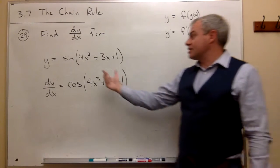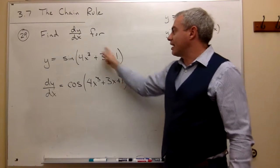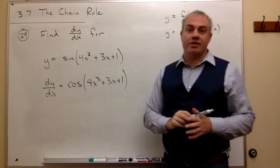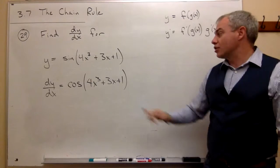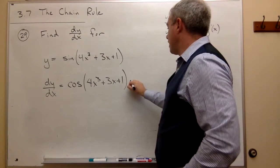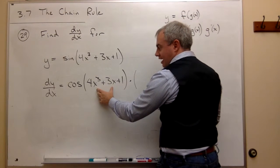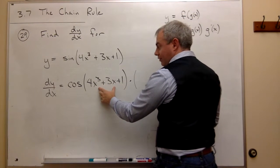Okay, in this case, the something was 4x cubed plus 3x plus 1. That's the thing I just left alone when I was taking the derivative of sine. So now I need to multiply. So multiply that by the derivative of the inside stuff, or the something, if you like.